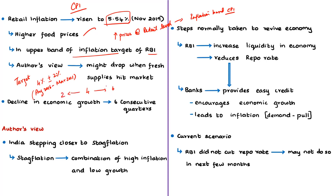Another macroeconomic indicator — GDP growth rate — which indicates the health of the Indian economy, has been declining for the last six consecutive quarters. Based on this data, India may be stepping closer to stagflation. Stagflation occurs when the economy passes through a long period of low aggregate demand relative to productive capacity, and when there is a sudden and temporary price rise in some goods. Stagflation is basically a combination of high inflation and low growth rates.